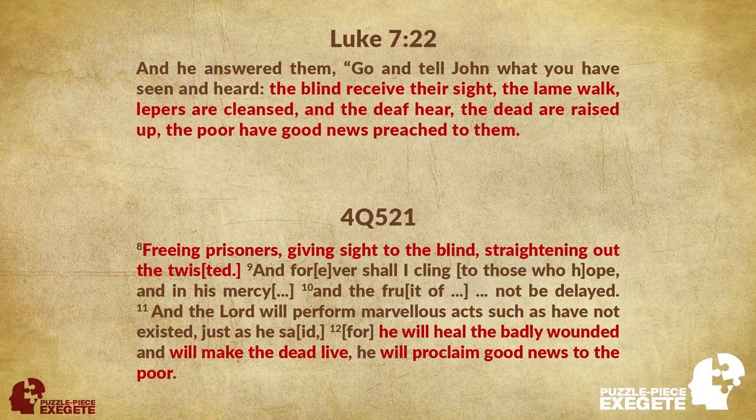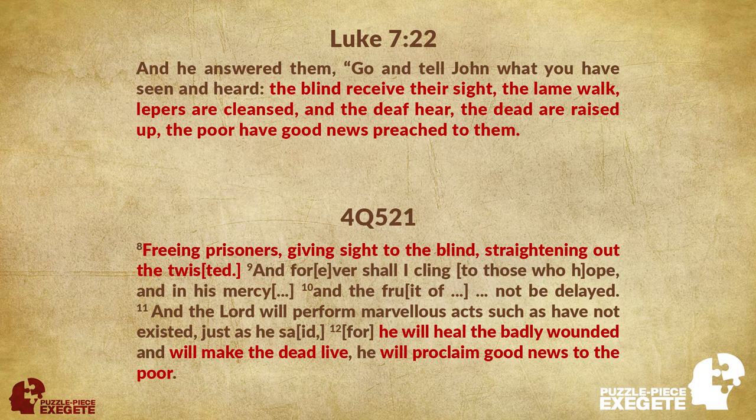If we look at Luke chapter 7, this is the account of John the Baptizer. He's in prison and he's sending out his own disciples to Jesus to ask him, 'Are you the one that we are to expect, or should we expect someone else?' Jesus awaited the Messiah, and this is Jesus' response. He says: 'Go and tell John what you have seen and heard — the blind receive their sight, the lame walk, lepers are cleansed and the deaf hear, the dead are raised up, the poor have good news preached to them.'